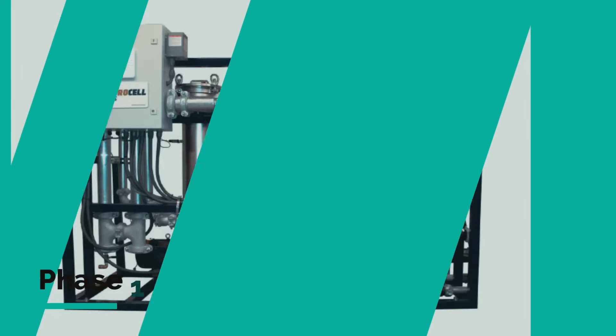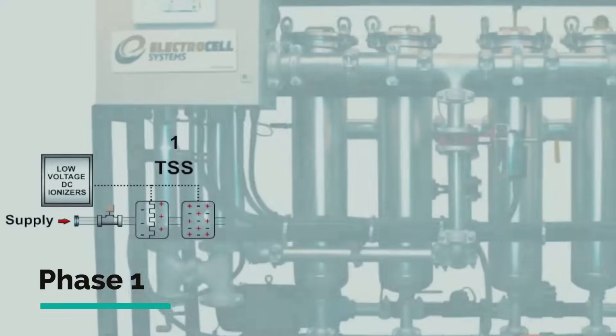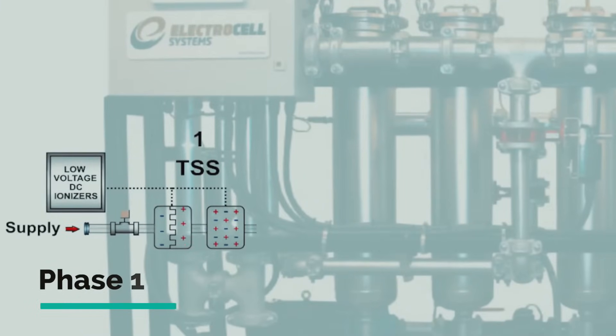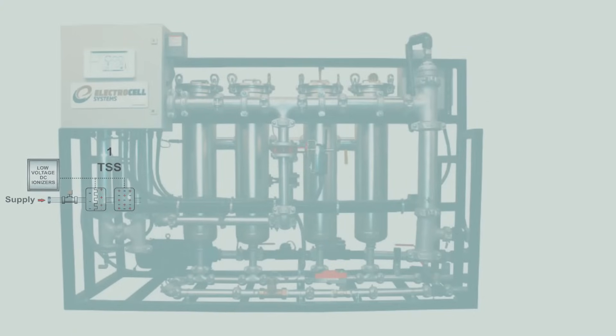Phase 1 of the 3-step treatment process is the application of alternating positive and negative electrical charges to the suspended particles using a low-voltage DC ionizer. This makes the oppositely charged suspended particles attract to each other and, as a result, grow in size and weight.